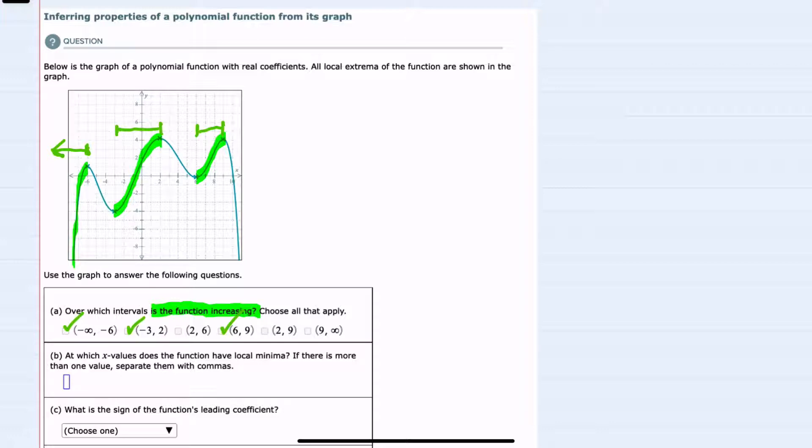Next we're asked to find the x-values where the function has a local minimum. So this time we're looking for a local minimum. We can see that that happens anytime the graph changes from moving down to moving up, we'll have a local minimum. So this happens here where x equals negative 3 and then again here where x equals 6. So 2 local minimum.